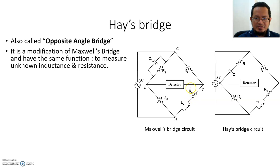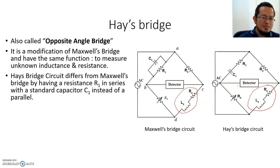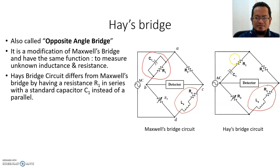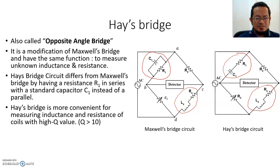As you can see, this is a Maxwell Bridge used to measure inductance and resistance. The Hay's Bridge also measures the same inductance and resistance of a coil. The only difference between Hay's Bridge and Maxwell's Bridge is this configuration here: in Maxwell's Bridge, C1 and R1 are in parallel, but in Hay's Bridge, R1 and C1 are connected in series with each other.